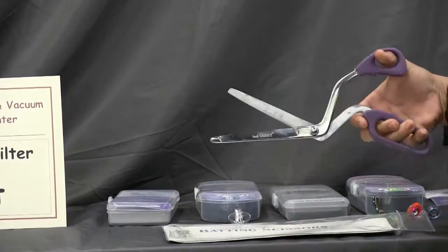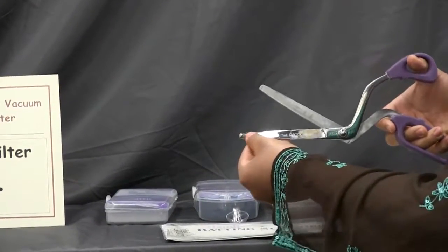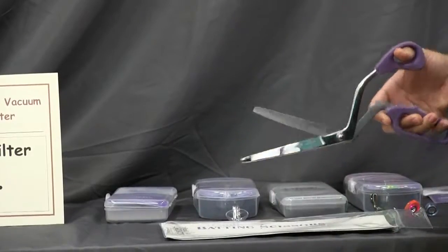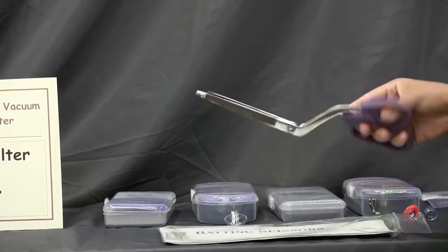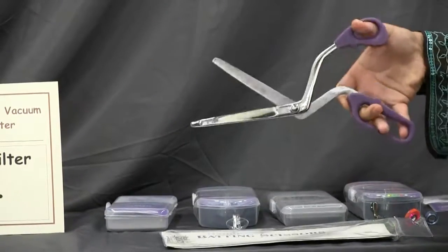The blades are actually two different lengths and it has a little knob down here so it avoids getting stuck in and out of your batting as you're trying to cut it. These are kind of monsters but much easier than regular scissors.